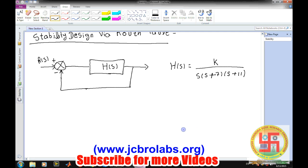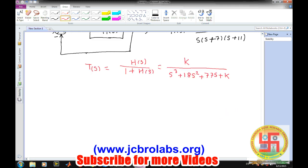This is our system and it is said for what values of K this system remains stable and what are the ranges after which this system starts becoming unstable. Let's first find out what is the closed loop transfer function. Closed loop transfer function will be H(s) divided by 1 plus H(s), which comes out to be K divided by s cube plus 18 s square plus 77 s plus K.